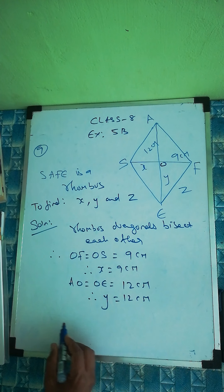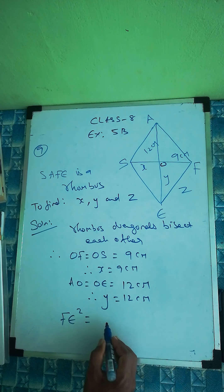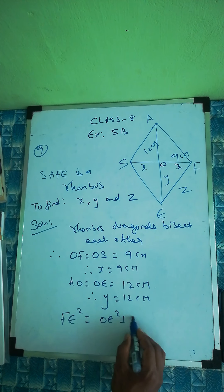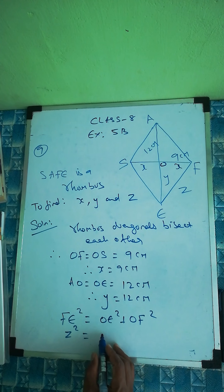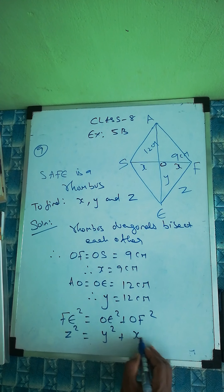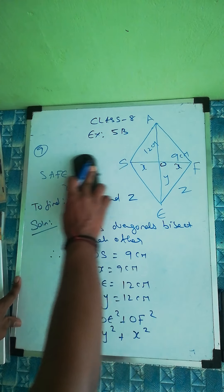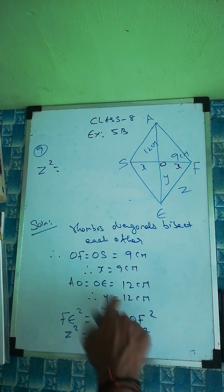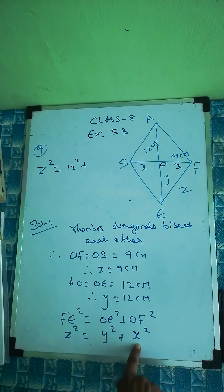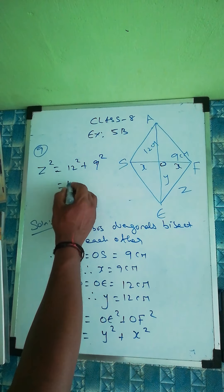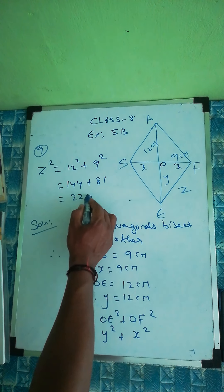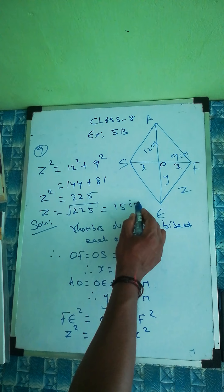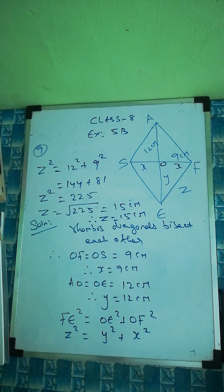Now to find z, we use the Pythagorean theorem. FE squared equals OE squared plus OF squared, so z squared equals y squared plus x squared, that is 12 squared plus 9 squared equals 144 plus 81 equals 225. Therefore z equals root of 225, which is 15 centimeters.